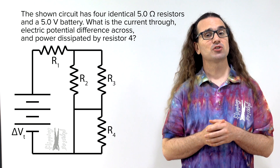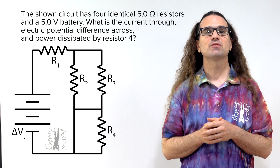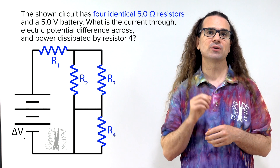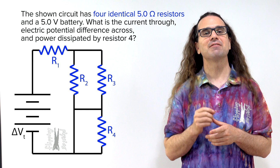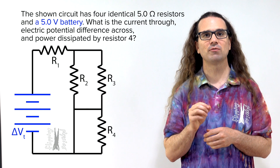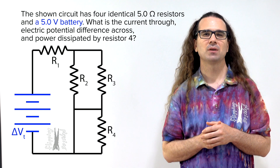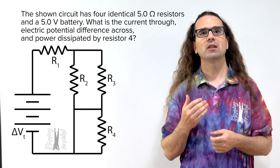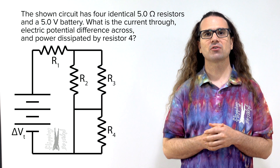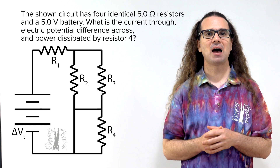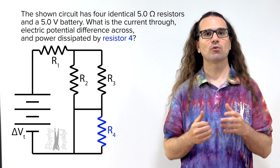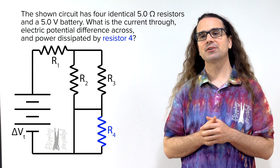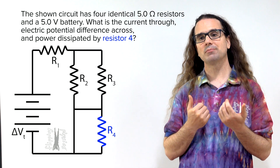Good morning. The circuit shown has four identical 5.0 ohm resistors and a 5.0 volt battery. What is the current through, electric potential difference across, and power dissipated by resistor 4? Bobby, what are your thoughts on how to solve this problem?